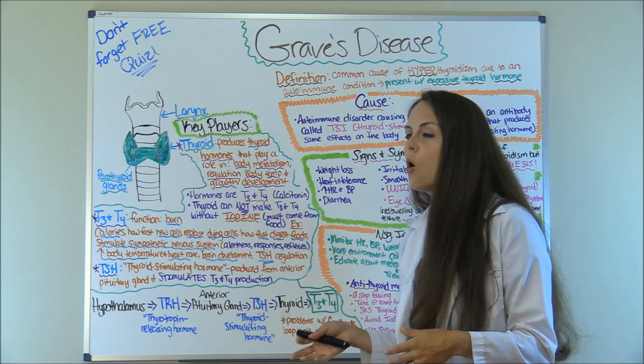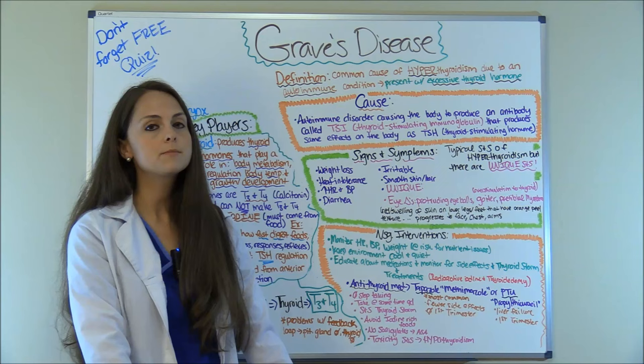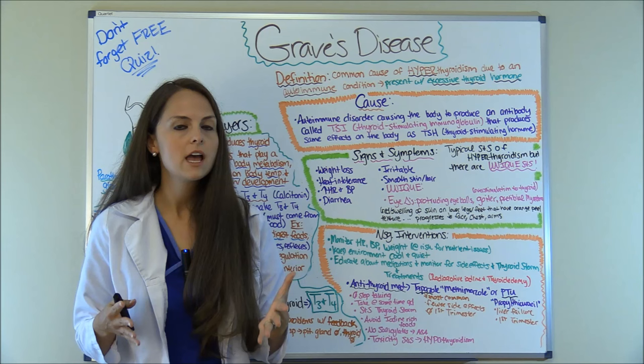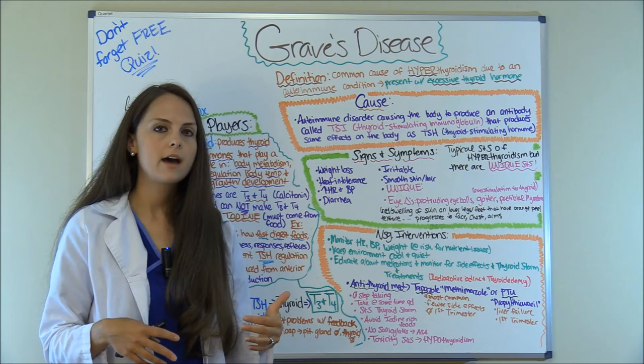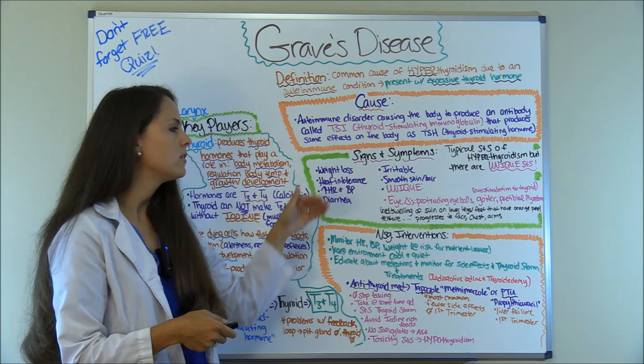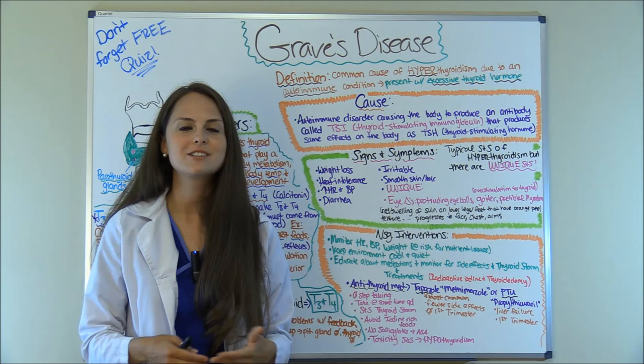Whenever you have too much of it, what's going to happen? Let's look at the signs and symptoms. The cause is TSI being produced by the body, and your body thinks it's TSH. As a nurse, you need to know these basic signs and symptoms in case you see them on an exam, because with Graves' Disease there are some unique signs and symptoms that other causes of hyperthyroidism don't have. You're going to have those typical signs and symptoms of hyperthyroidism: weight loss — because T3 and T4 helps you burn calories at a rapid rate — and heat intolerance, because T3 and T4 increase your temperature, so they're going to be sweaty.